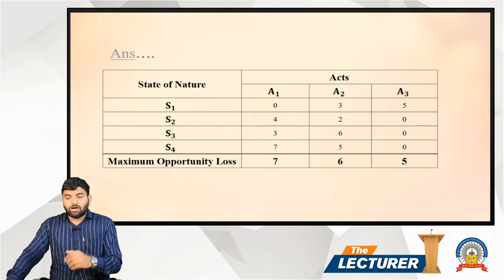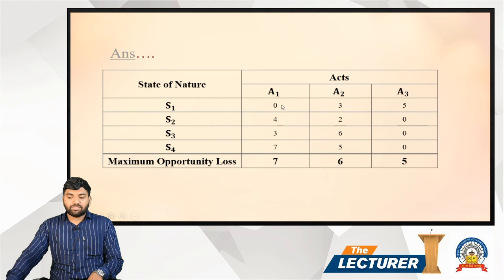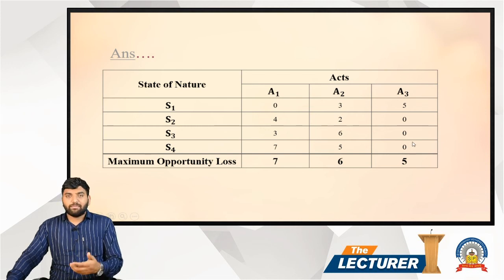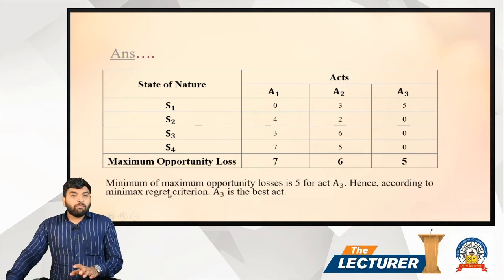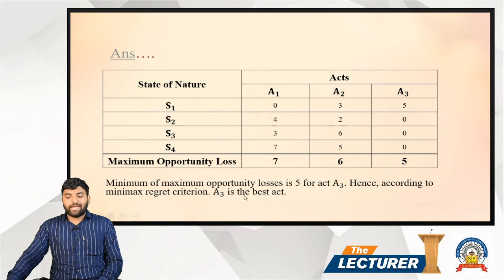From the opportunity loss table, we find the maximum loss for each act: a1's maximum loss is 7, a2's maximum loss is 6, and a3's maximum loss is 5. The minimum of these maximum losses is 5, which belongs to a3. Hence, according to the minimax regret criterion, a3 is the best act.